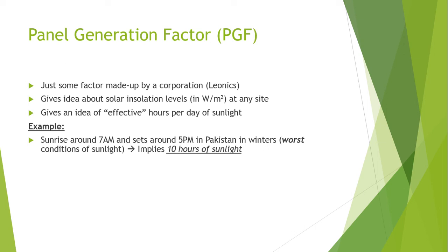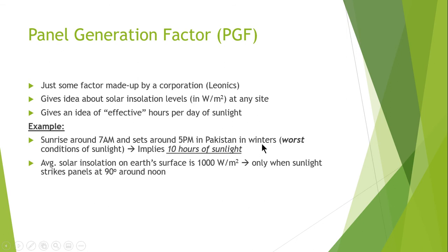The sun rises around 7 a.m. and sets around 5 p.m. in our country. In winter, worse conditions of sunlight imply approximately 10 hours of sunlight. The average solar insolation on the Earth's surface is about 1000 watts per meter squared, which occurs when sunlight strikes at approximately 90 degrees.